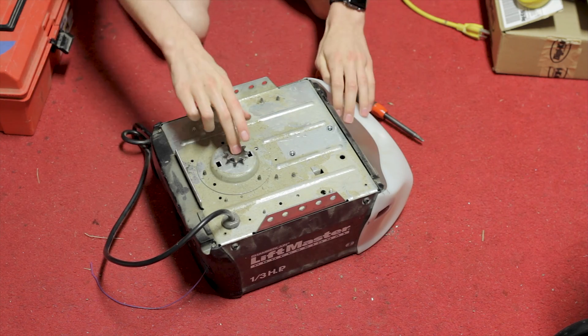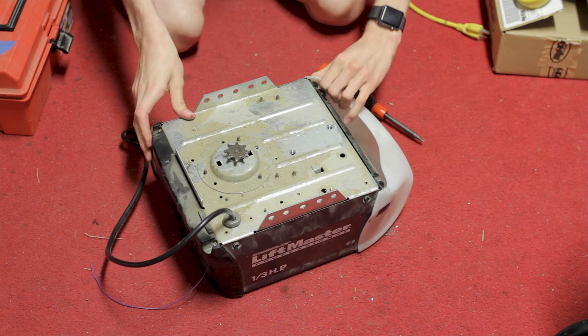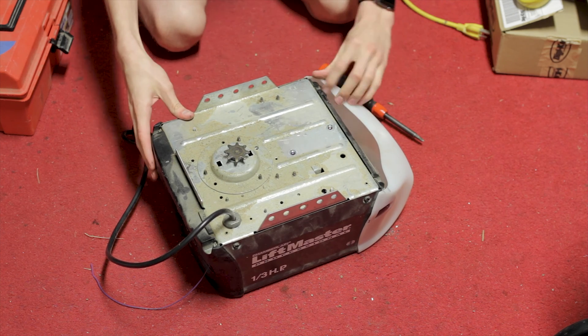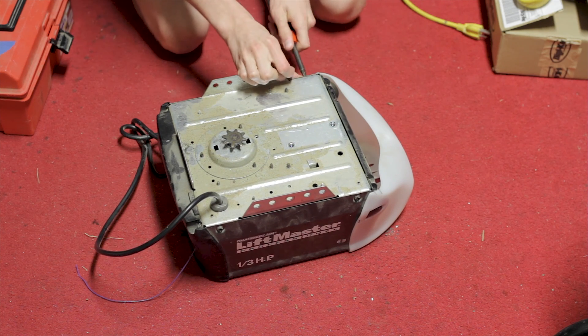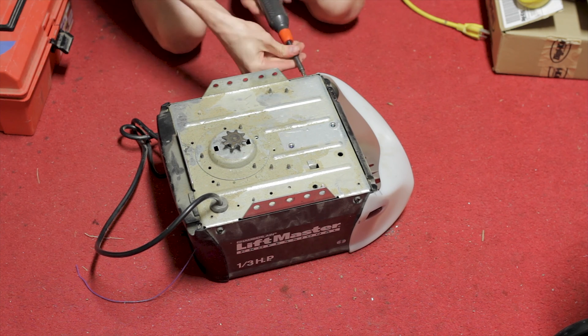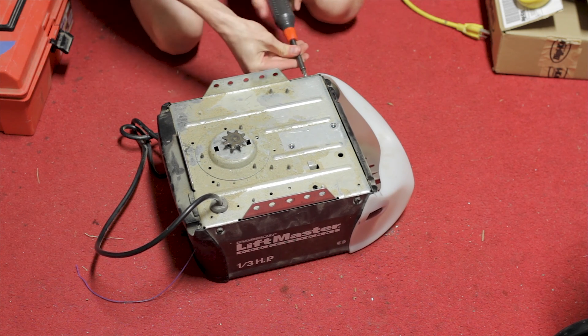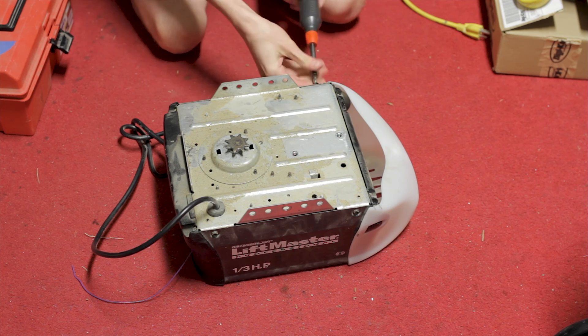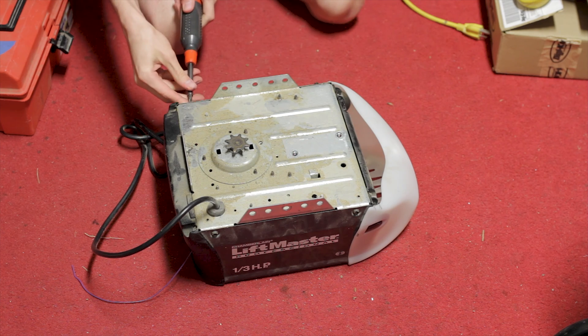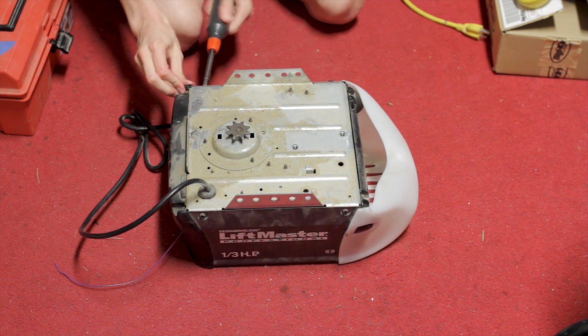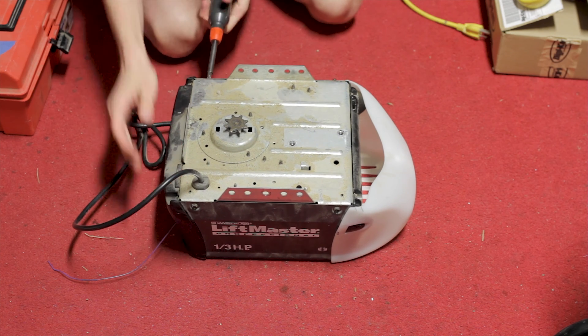This guy here runs a chain which lowers and closes your garage door. I've never actually been in one of these. I've never seen the insides, never looked up pictures to see what's in them. I'm guessing there's going to be a small motor. I'm going to make a bet it's a universal motor because they're being cheap and don't want to put a nice one in.